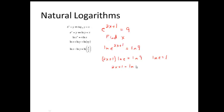So solving for the variable, it would be subtract 1 from both sides, you have 2x equals ln of 9 minus 1, therefore x equals ln of 9 minus 1 divided by 2.